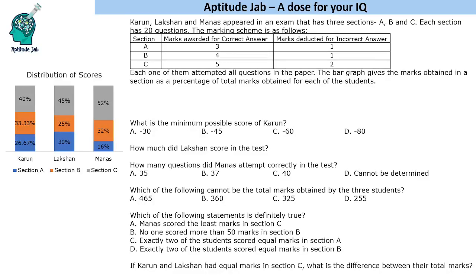Welcome to Aptitude Jab. This is a logical DI problem. There are three students who appeared in an examination which had three sections, and each section had 20 questions. The marking scheme is given in a table, and we are given one bar graph showing marks obtained in each section as a percentage of total marks obtained for each student. It's a stacked bar graph. We need to find their scores, minimum possible scores, and related things.